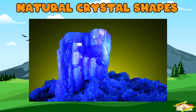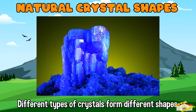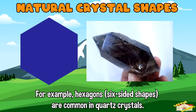Natural crystal shapes — different types of crystals form different shapes. For example, hexagons, which is a six-sided shape, are common in quartz crystals.